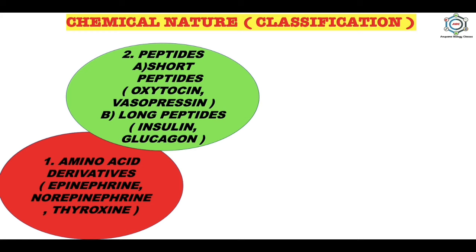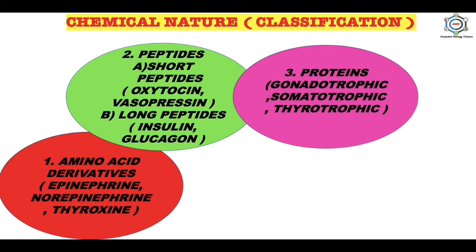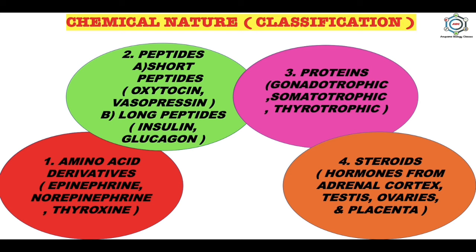Long peptides include insulin and glucagon from the pancreas, adrenocorticotropic hormone from the anterior lobe of the pituitary, calcitonin from the thyroid, and parathormone from the parathyroid gland. The third type is proteins — examples are gonadotropic, somatotropic, and thyrotropic hormones released from the anterior lobe of the pituitary. The fourth type is steroids — these hormones are released from the adrenal cortex, testes, ovaries, and placenta, and are synthesized from cholesterol.